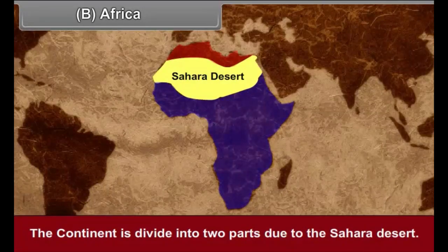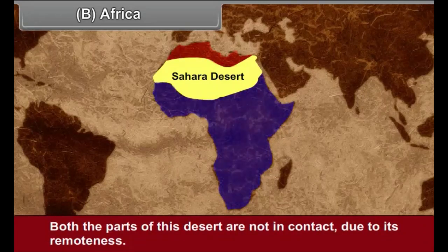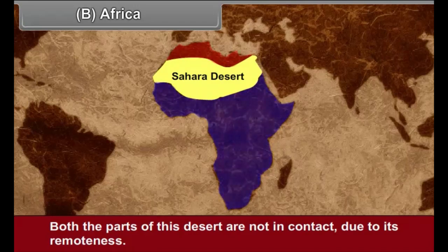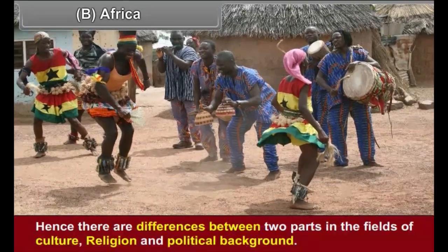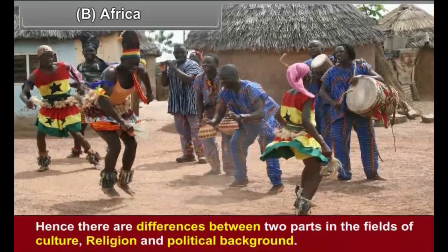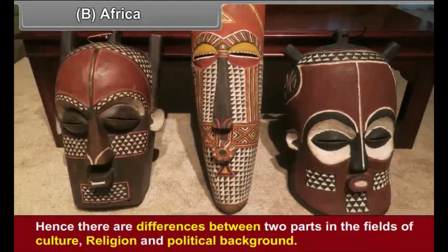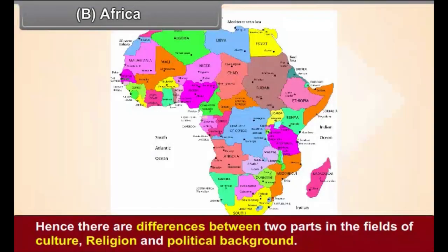The continent is divided into two parts due to the Sahara Desert. Both parts are not in contact due to its remoteness. Hence, there are differences between the two parts in the fields of culture, religion, and political background.